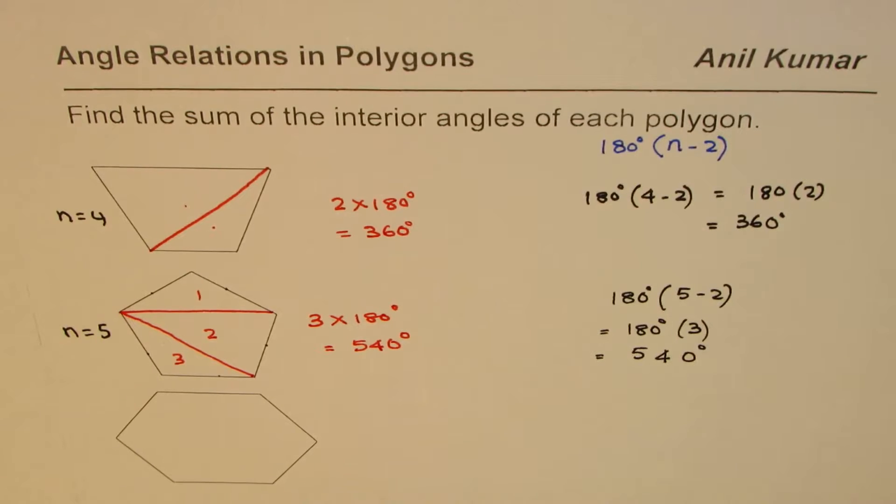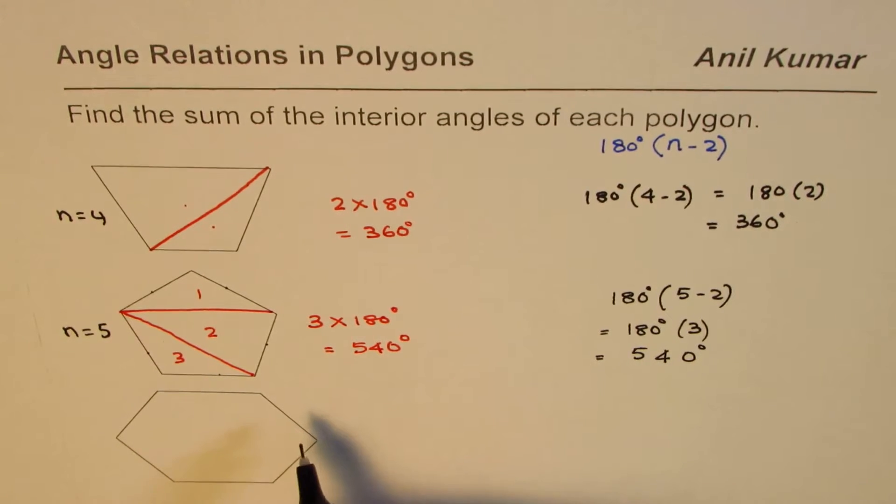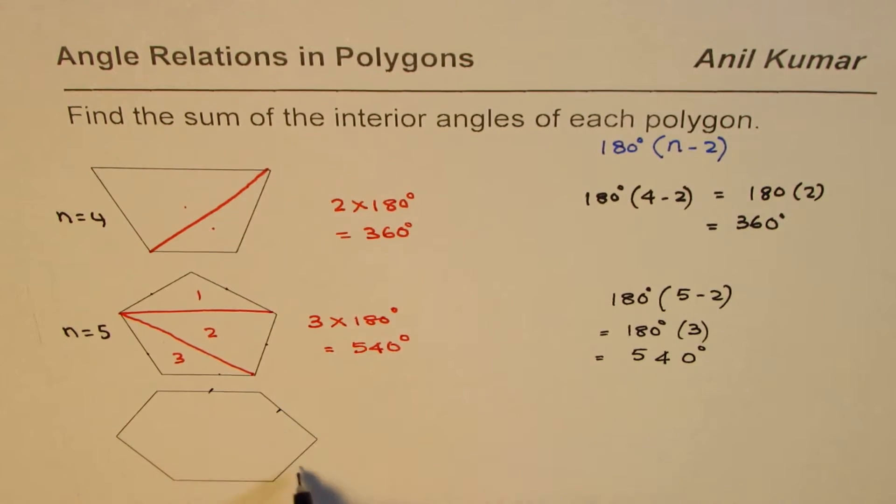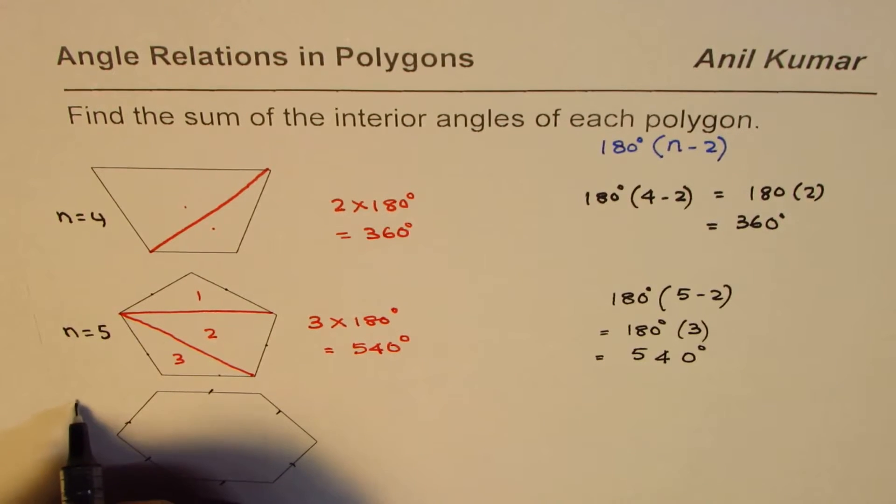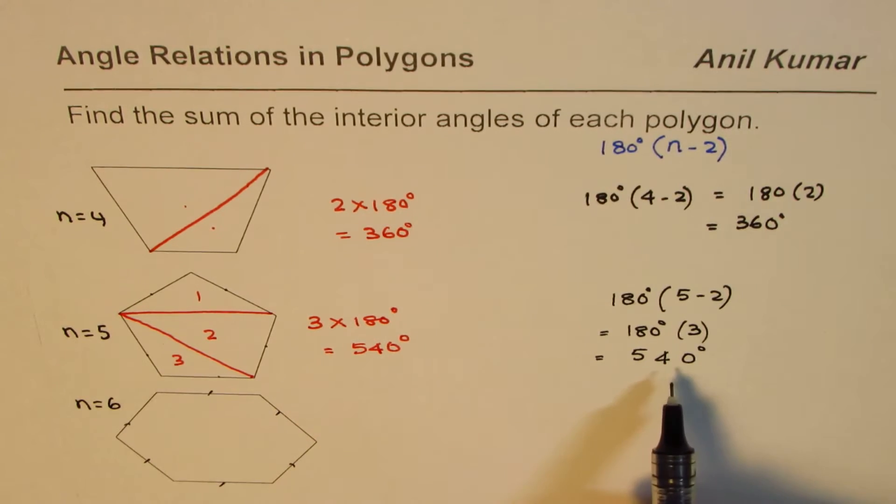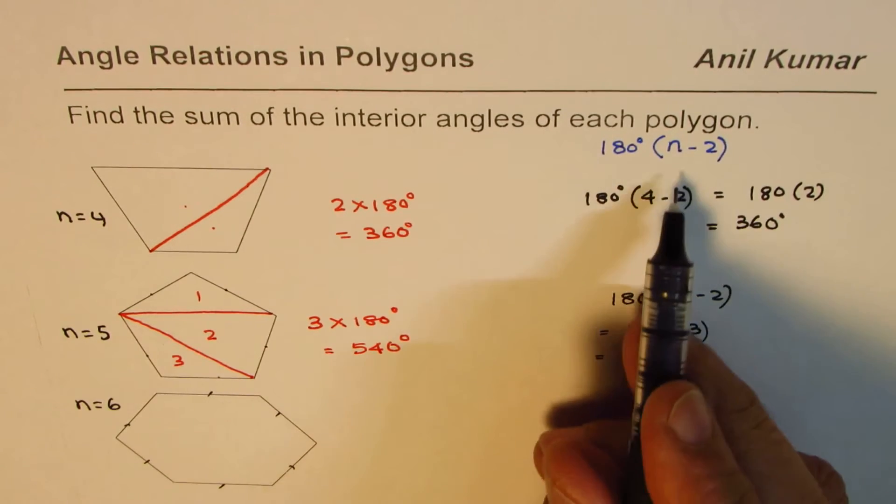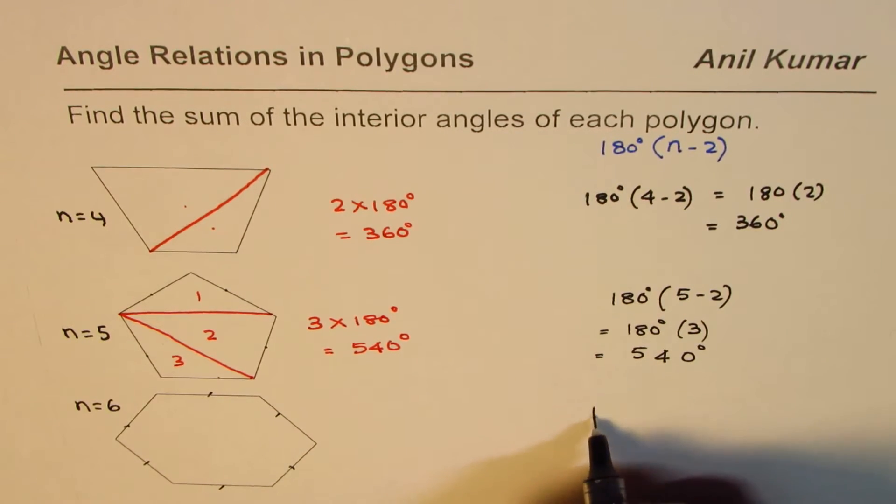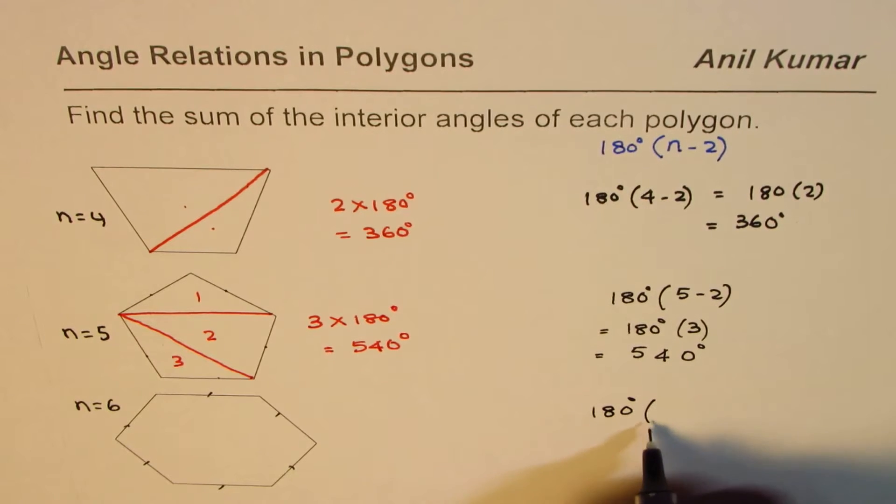Let this be a practice question for you. Count the number of sides: 1, 2, 3, 4, 5, 6. It is a hexagon with 6 sides. You can use any of these methods to find the sum of interior angles. Using the formula, replace n by 6 to get 180 degrees times 6 minus 2.